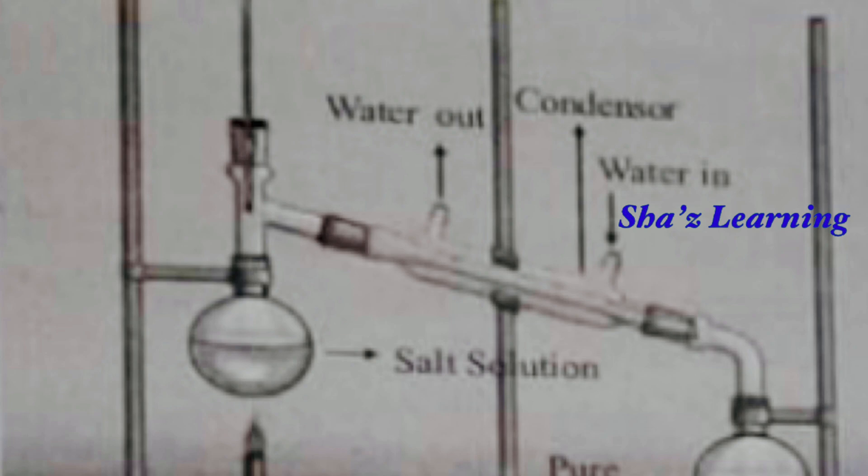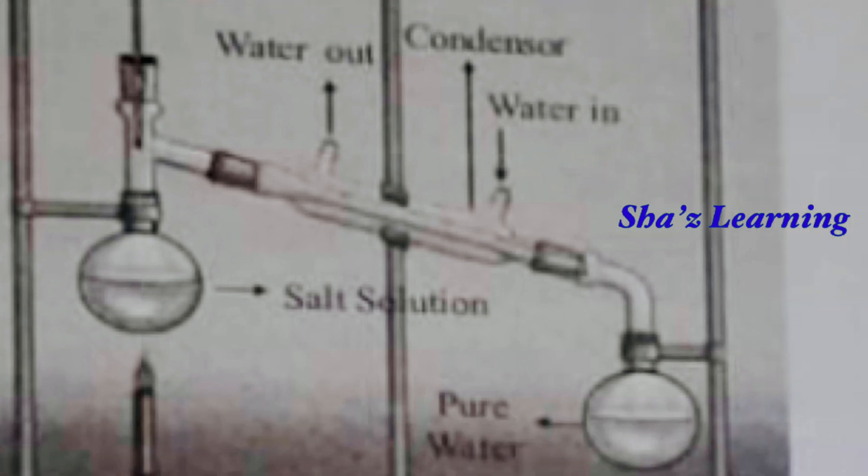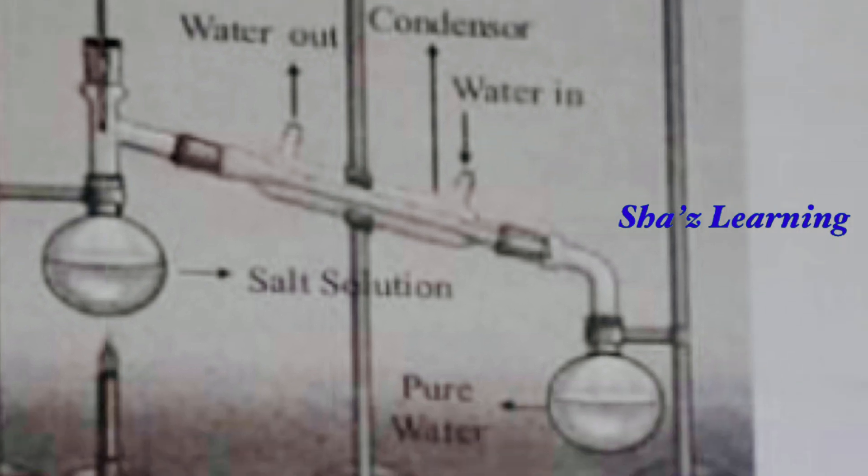After coming into the condenser, the vapor is condensed into liquid. The vapor is clean and pure — it is not mixed with salt. This liquid is collected in the flask.